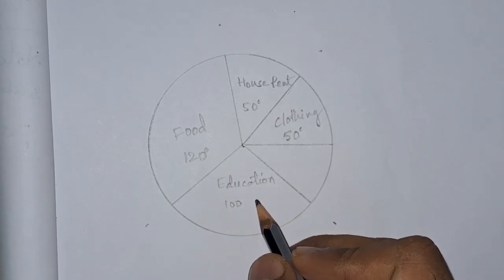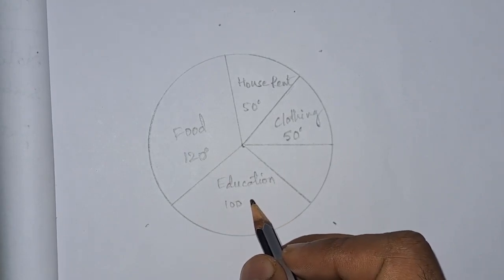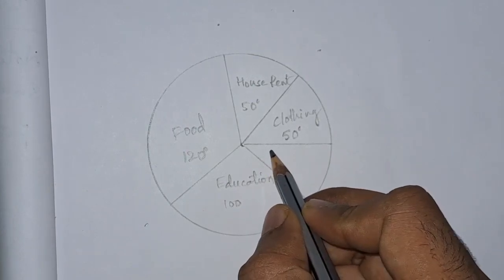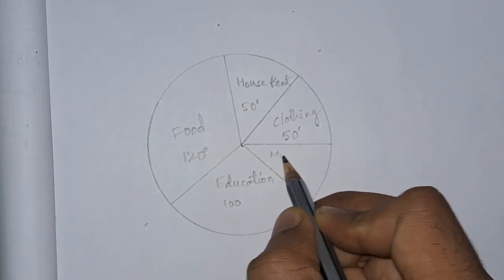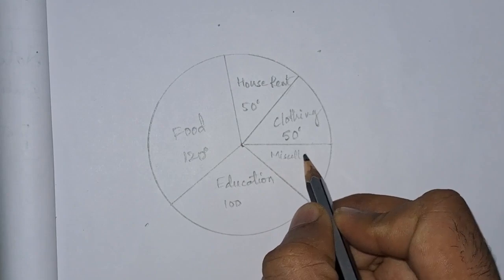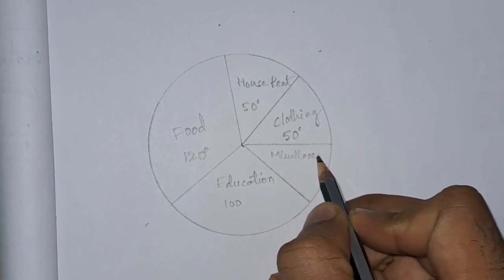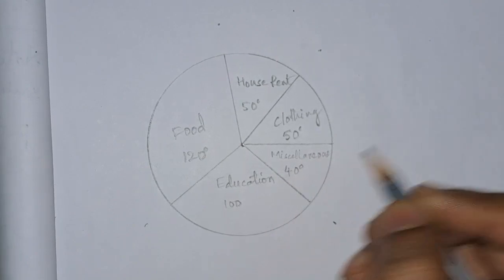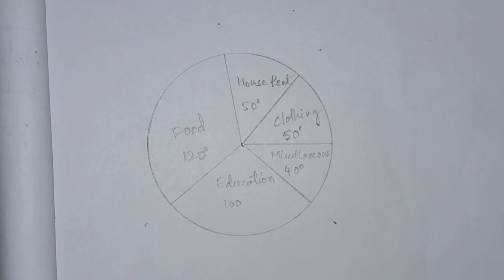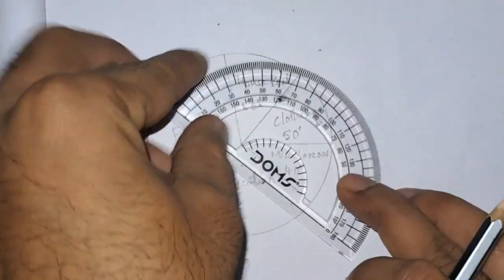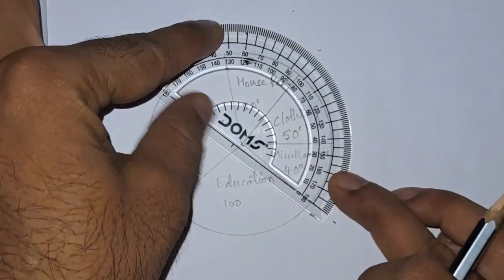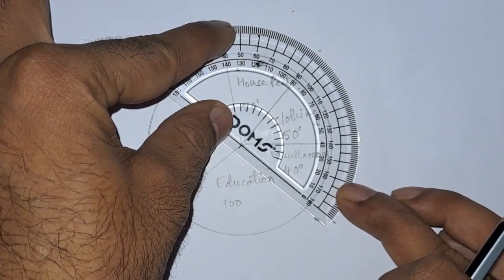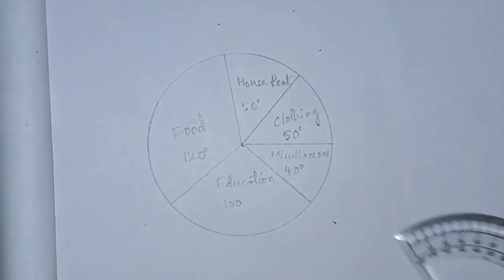Next is miscellaneous, which is 40 degrees. So let us mark miscellaneous as 40 degrees. We will verify whether it is 40 or not — yes, it is 40 degrees. The pie chart is now complete.